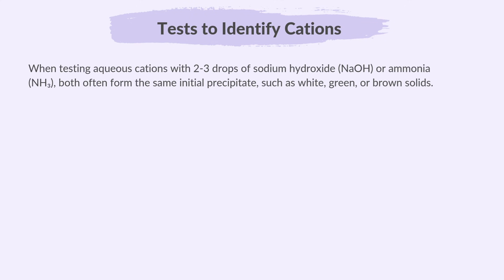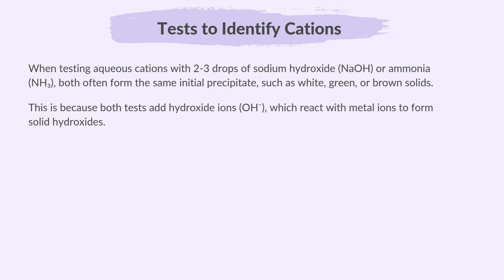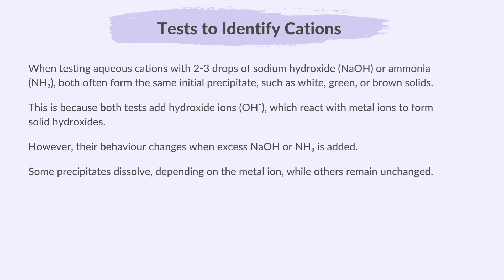This is because both tests add hydroxide ions, which react with metal ions to form solid hydroxides. However, their behaviour changes when excess sodium hydroxide or ammonia is added — some precipitates dissolve depending on the metal ion, while others remain unchanged. This difference helps identify specific cations.